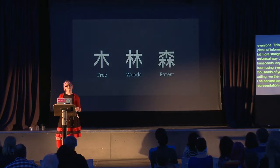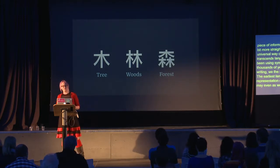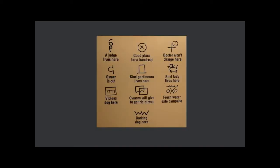Even as we transitioned to more alphabetic languages, symbols were still a part. Chinese is one of the oldest continually used writing systems still in use. It's generally logographic, but still has characters that are quite pictographic in nature. Using icons to communicate isn't just a relic of the past.